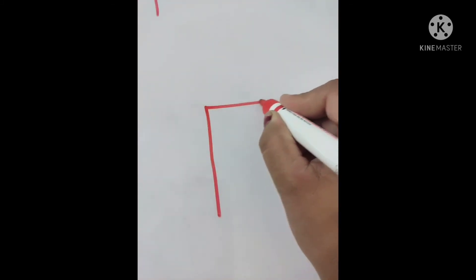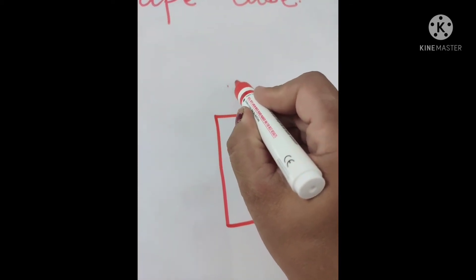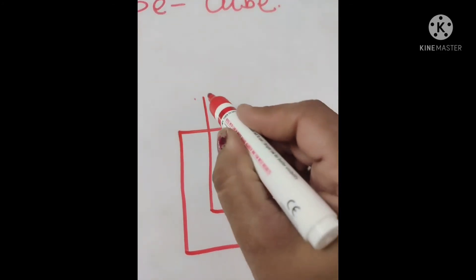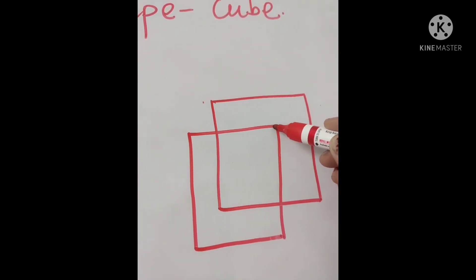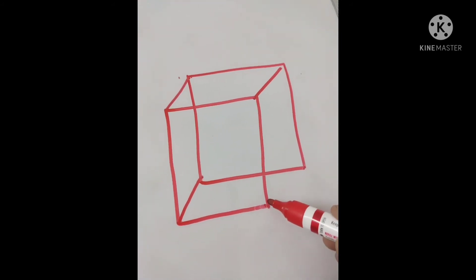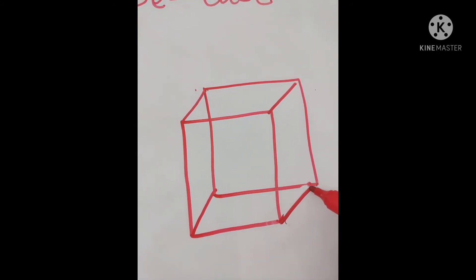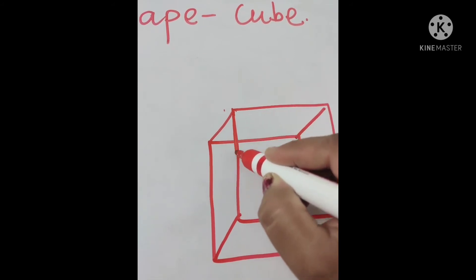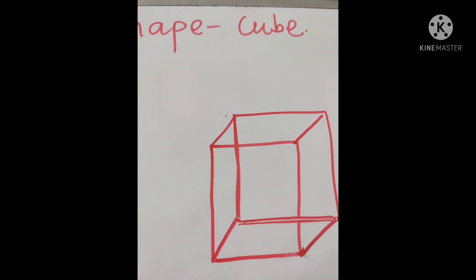Another way to draw a cube: first draw a square, then again draw one more square slightly offset like this, and then join the lines of both squares together like this. So students, this is also called a cube.